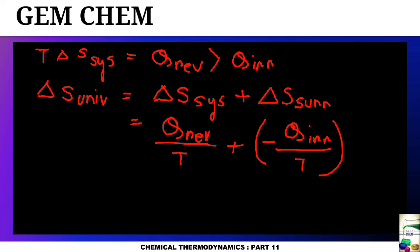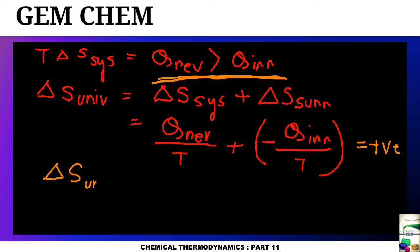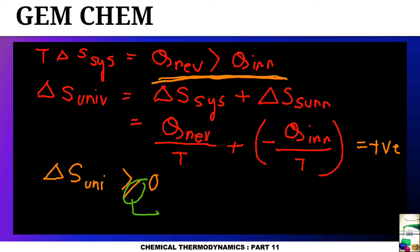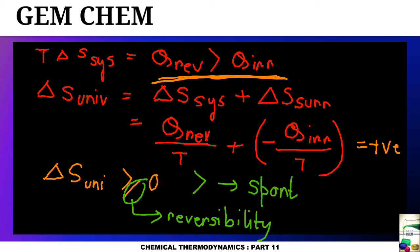The total comes to be a positive value, since q reversible is greater than q irreversible. So we can write: delta S universe is greater than or equal to zero. The equality holds for reversibility, whereas the greater-than sign stands for spontaneity — showing how spontaneously the reaction occurs — and it indicates irreversibility.